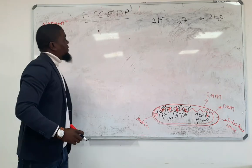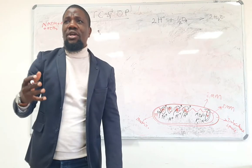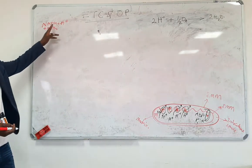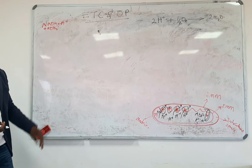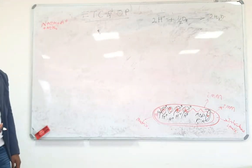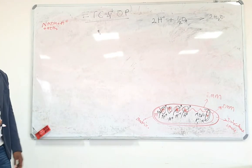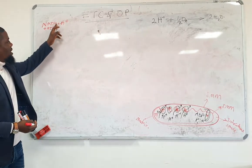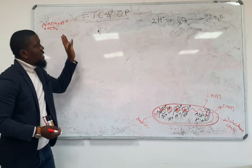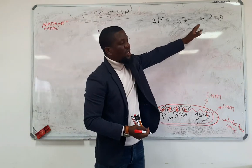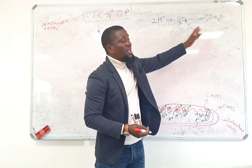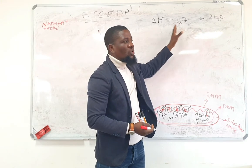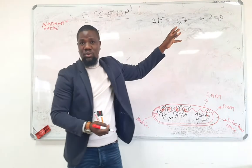Energy generation is actually going to happen from reduced equivalents, which would include NADH and FADH2. At the end of the day, what is going to happen is that hydrogen is going to be given onto oxygen, producing water. This is the simpler way of showing the equation, but let me show you how this happens in real time.